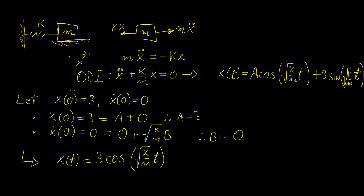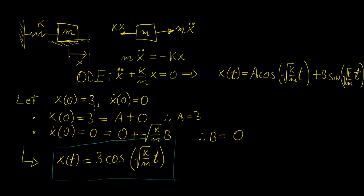Now if we give it some initial conditions — and because it's a second order equation, we need an initial condition for the displacement and one for the velocity — putting those two into the general solution, we get the coefficients a and b. This allows us to obtain the particular solution to this problem, which is what we're going to use to compare against our Euler approximation.